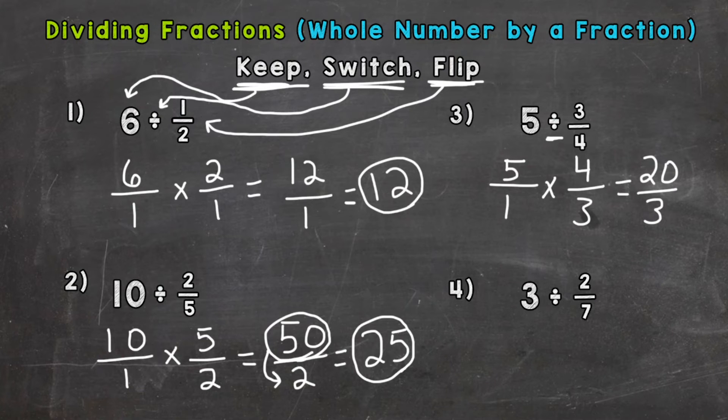Now that's an improper fraction, so we need to convert it to a mixed number or whole number. So we need to do 20 divided by 3. How many whole groups of 3 can we pull out of 20? And the answer is 6. Now that only gets us to 18, and we need to get to 20. So we actually have a remainder or something left over. So a remainder of 2,